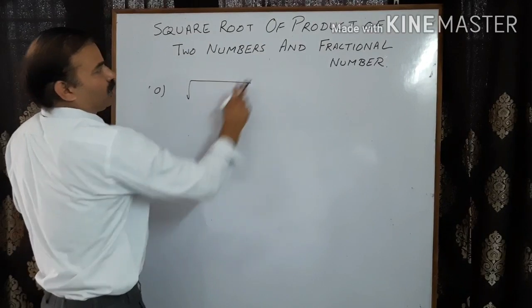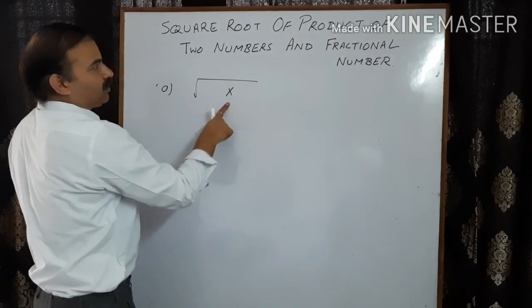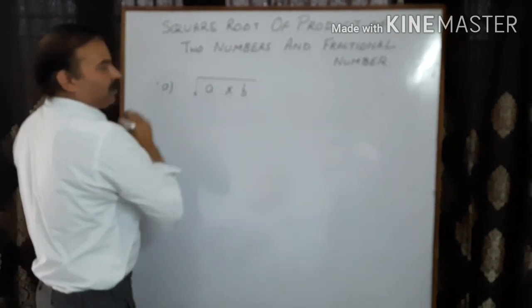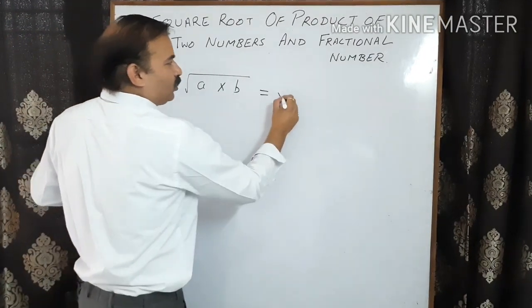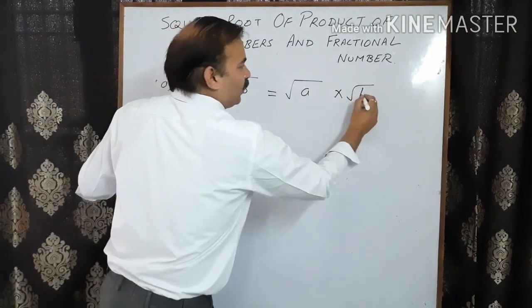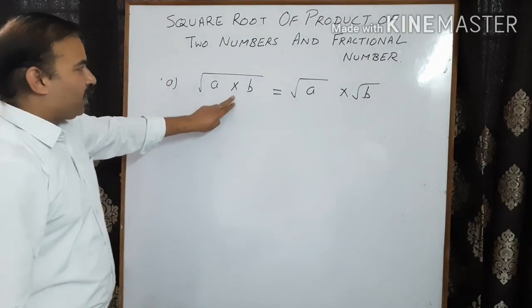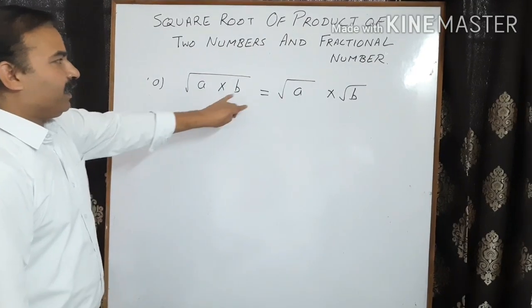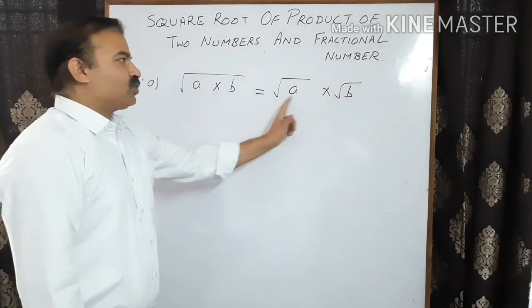The first topic is the square root of a product. If one number is a and the other number is b, then square root of a multiplied by b is equal to square root of a multiplied by square root of b. The square root of a product of two numbers is equal to the product of the square roots of the numbers.